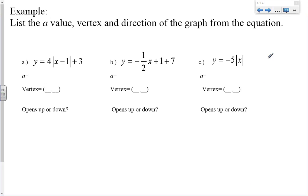So let's take a look at these three examples. It says list the a value, list the vertex, and then the direction of the graph from the equation. So our first equation is y equals 4 times the absolute value of x minus 1 plus 3.